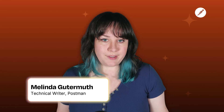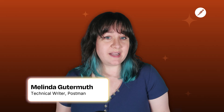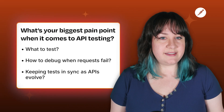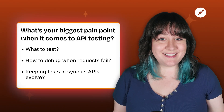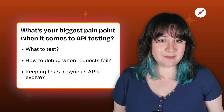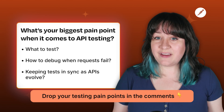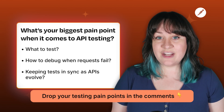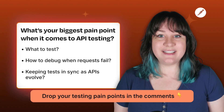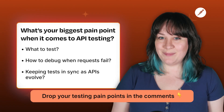Before we dive in, I want to know: what's your biggest pain point when it comes to API testing right now? Is it figuring out what exactly to test? How to debug when requests fail? Keeping your tests in sync as APIs evolve? Leave a comment down below, because I want to hear if Agent Mode can solve your specific problem. And don't forget to stick around until the end, because I have one bonus tip for Agent Mode that you won't want to miss.